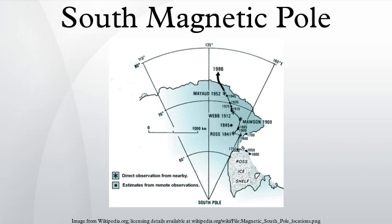The south magnetic pole is the wandering point on the Earth's southern hemisphere where the geomagnetic field lines are directed vertically upwards. It should not be confused with the lesser-known south geomagnetic pole described later.